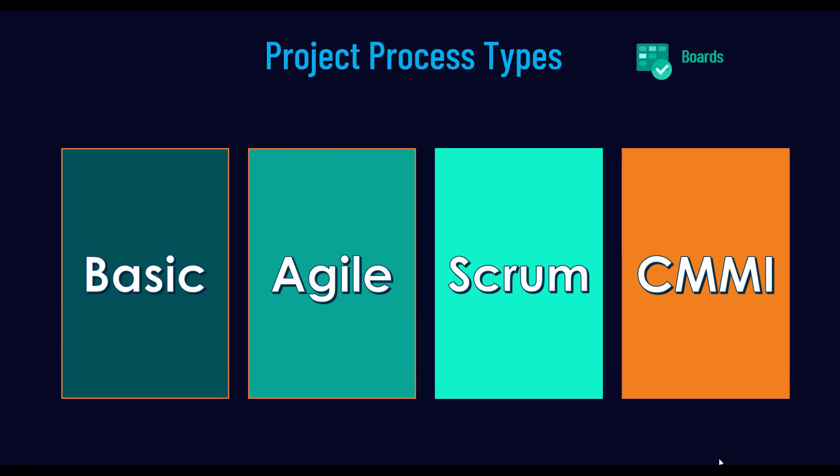Next you have the flavor of agile process which is the scrum type of process. If you are working with a proper agile scrum methodology wherein you would like to follow sprint review, retrospective, planning and things like that, then you can go ahead and choose this scrum type of process, which is an extended version of the agile process.